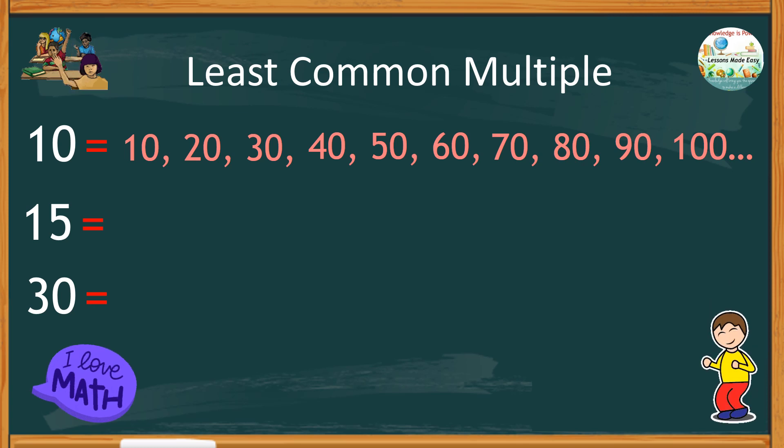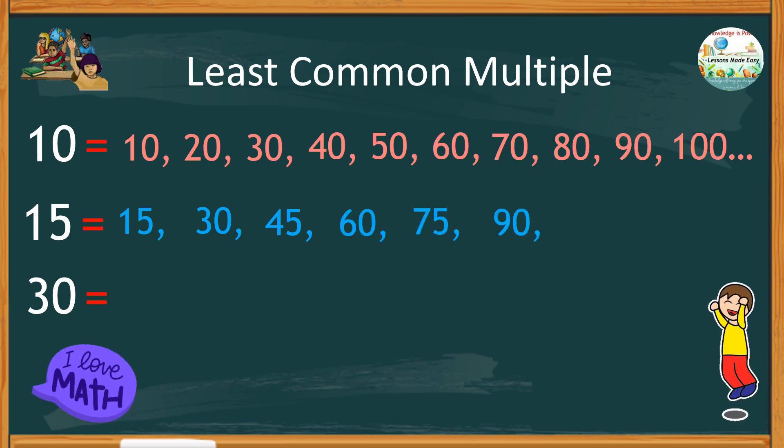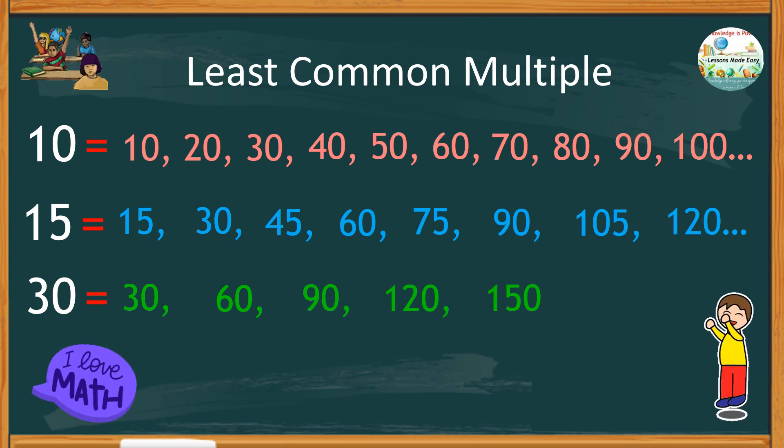Next, list down the multiples of fifteen. The multiples are fifteen, thirty, forty-five, sixty, seventy-five, ninety, one hundred and five, one hundred and twenty, one hundred and fifty, one hundred and eighty, and so on.